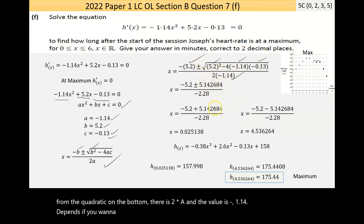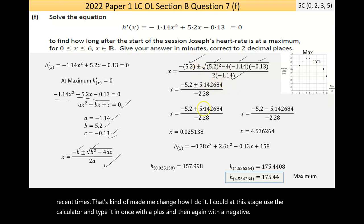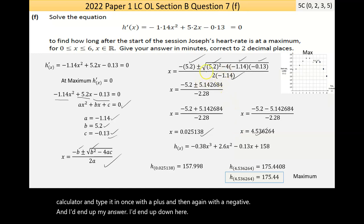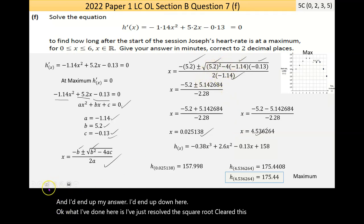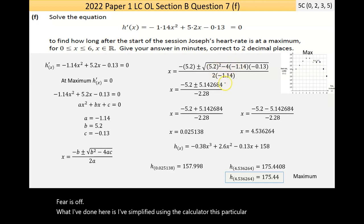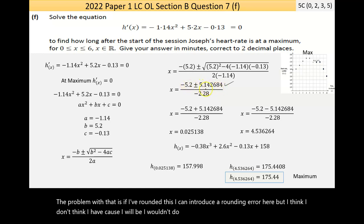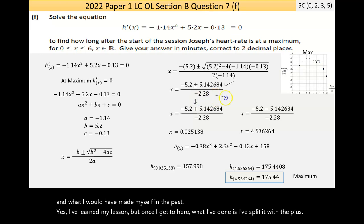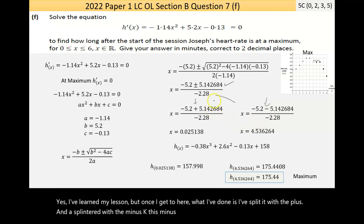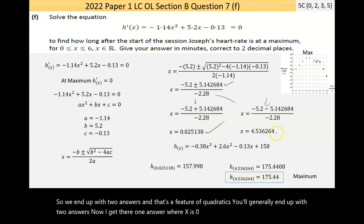We're going to have to use the quadratic formula. All I've done then is everywhere I see the letter, I put the appropriate number. Instead of the b in brackets, I put the 5.2. Then b is repeated, and I put the 5.2 again. Instead of the a value, I'm putting the negative 1.14. And instead of the c value, I'm putting the negative 0.13. On the bottom there is 2 times a, and the a value is negative 1.14. I could type it in once with a plus, and then again with a negative. I've split it with the plus and with the minus. So I end up with two answers. I get one answer where x is 0.02, and one answer where x is 4 point something.